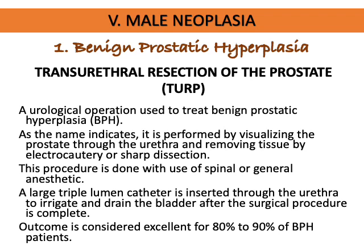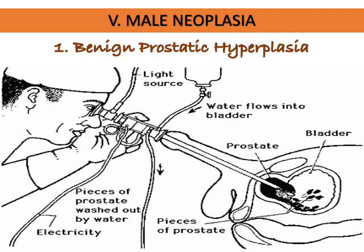After the TURP procedure, nurses must monitor continuous bladder irrigation to remove clots from the bladder and prevent catheter obstruction. The outcome is excellent — at least 80 to 90 percent of BPH patients recover well after surgery. Self-catheterization may also be taught, done intermittently to relieve urinary retention, though UTI is a common concern.